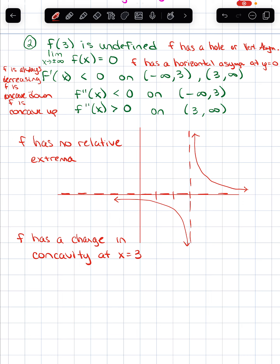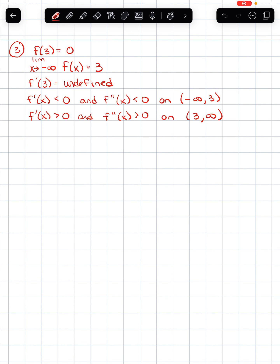Here's one more example — even more unusual than the last one. Go give it a shot and come right back. On this one, there is a point on f of x at 3 comma 0. As x approaches very small numbers on the left, the function approaches y equals 3 — that means there's a horizontal asymptote, just approached from the left side of the graph. So f has a horizontal asymptote at y equals 3.